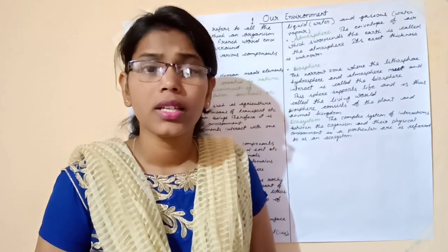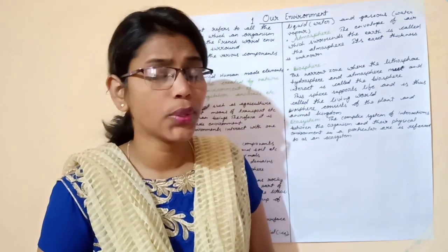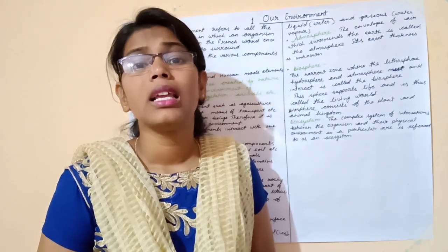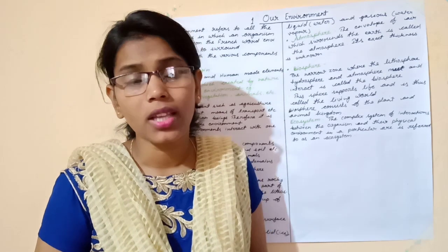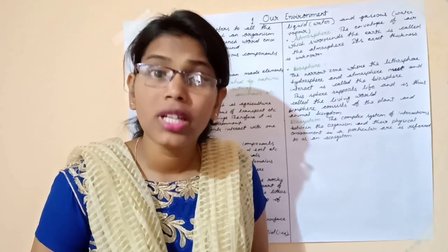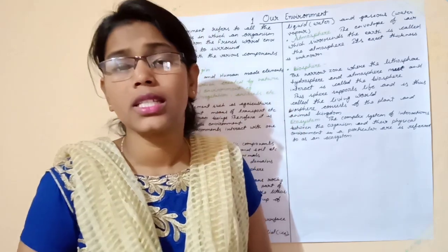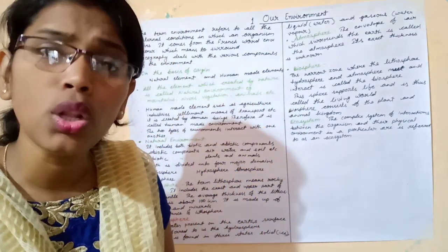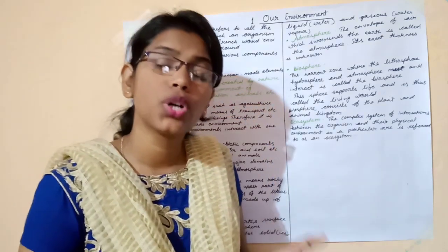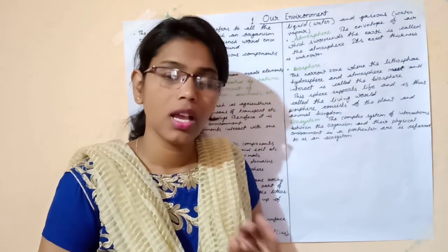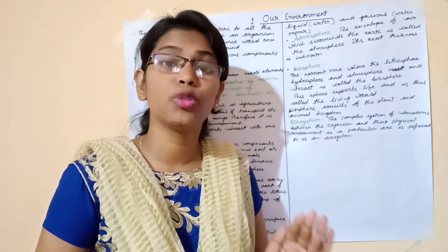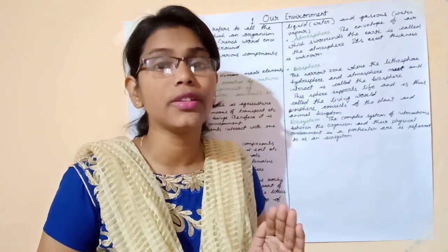Human-made things include buildings, schools, colleges, roads, hospitals, and transport. These things are made by humans, so they are called human environment. All things made by nature are called natural environment, and all things made by human beings are called human environment.